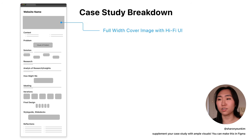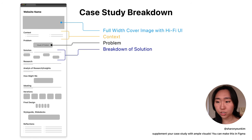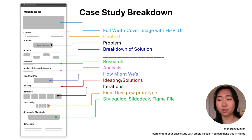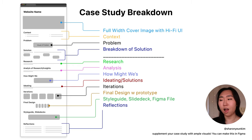Going through these case studies, the overall structure I found starts with a gorgeous cover image, followed by context and an intro — who your teammates were — then a solution first, a breakdown of that solution, followed by research, analysis, how-might-we's, ideation, design iterations, final design, and links to the style guide, slide deck, and possibly your Figma file. Adding an extra space for a reflections page is always a plus.